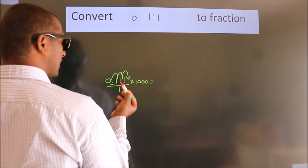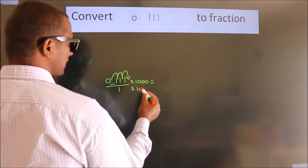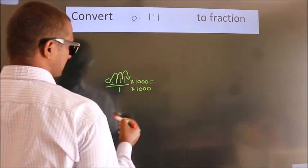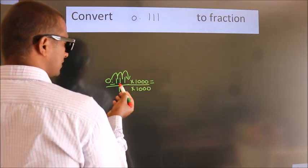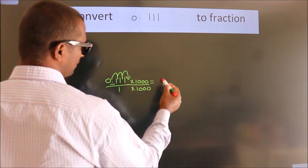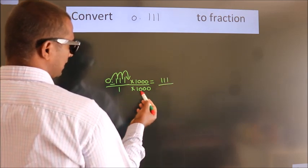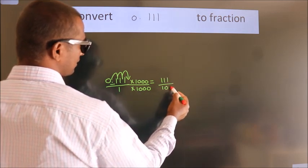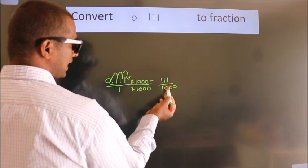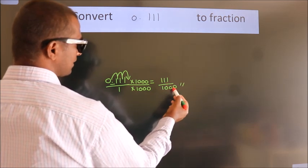Whatever you are multiplying in the numerator, in the denominator also do the same. 0.111 into 1000 equals 111, and 1 into 1000 equals 1000. This cannot be simplified any further, so 111 over 1000 is our fraction.